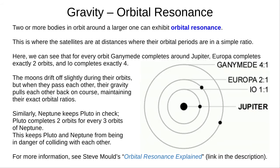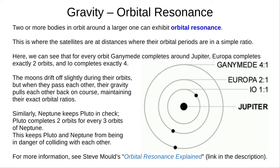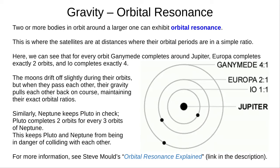Almost the opposite of chaotic orbits is orbital resonance. This can occur when two or more bodies orbit a larger one, and the satellites are at distances where their orbital periods are in a simple ratio. Around Jupiter, for every orbit Ganymede completes, Europa completes exactly two orbits, and Io completes exactly four. The moons do drift off slightly during their orbits, but when they pass each other, their gravity pulls each other back on course, maintaining their exact orbital ratios. Similarly, Neptune keeps Pluto in check — Pluto completes two orbits for every three orbits Neptune completes, which prevents Pluto and Neptune from ever colliding with each other.